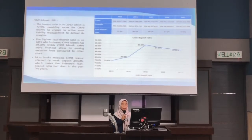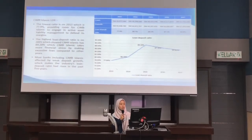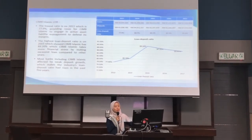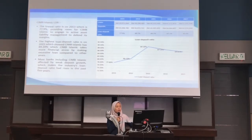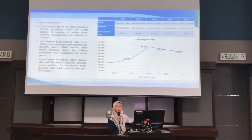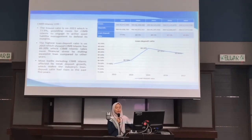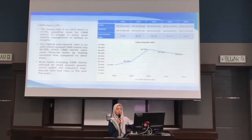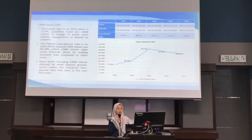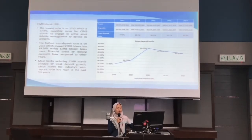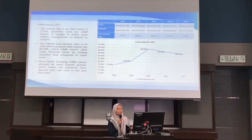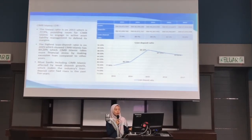Based on the graph, CIMB Islamic's loan to deposit ratio shows that the lowest ratio was in 2013 at 77.9%, providing CIMB Islamic the opportunity to engage in active liability management to define its margin. The highest loan deposit ratio was in 2015 at 89.2%, indicating more financial stress by making excessive loans compared to other years.